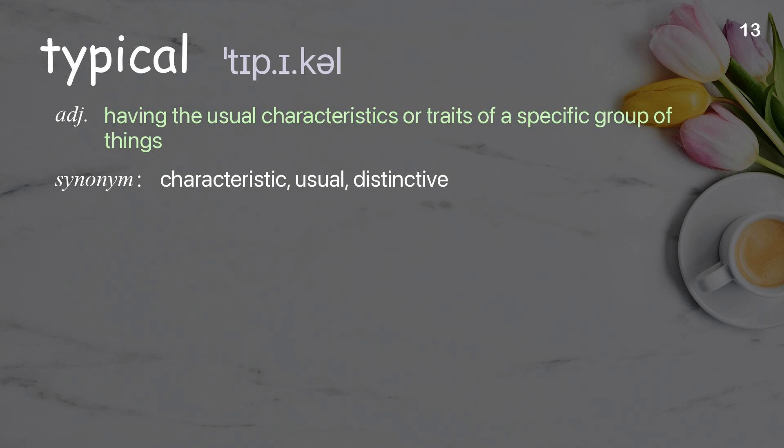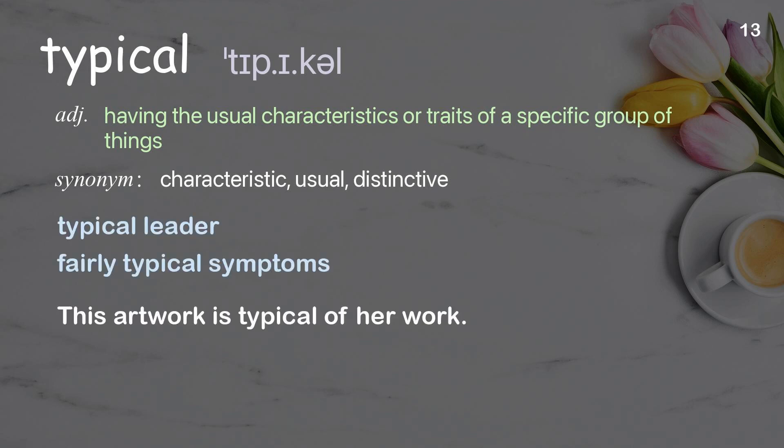Typical: having the usual characteristics or traits of a specific group of things. Examples: typical leader, fairly typical symptoms. This artwork is typical of her work.